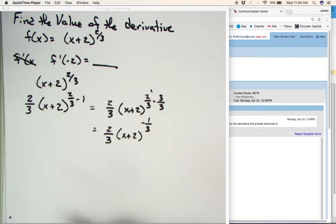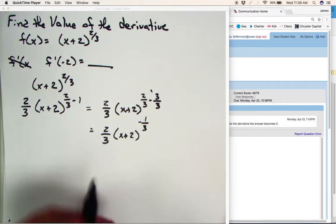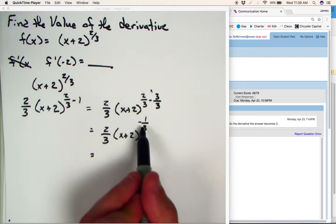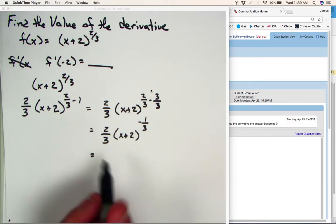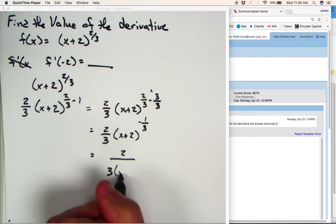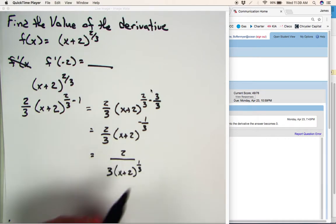Alright. So now when we go ahead and rewrite this, by using your laws of exponents, we have a negative exponent up here. So we can rewrite it using a positive exponent. So this would be a 2 on the top, and then a 3 times x plus 2 at the bottom raised to the positive 1 third power.